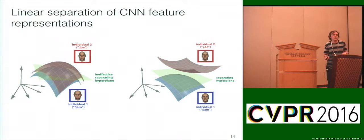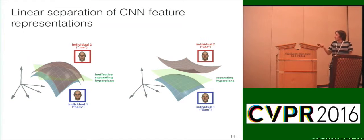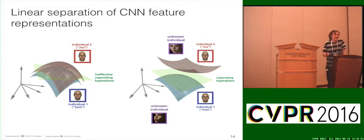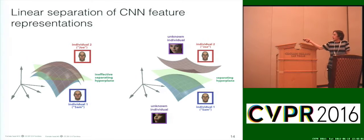The features work for two individuals — say Sam and Joe. But what if unknown individual number one pops up in the feature space, or unknown individual two? This model says nothing about the unknowns. The feature representations are tuned to the training data. Your linear classifier, which discriminates between those two known individuals, still leaves us with the open set problem.